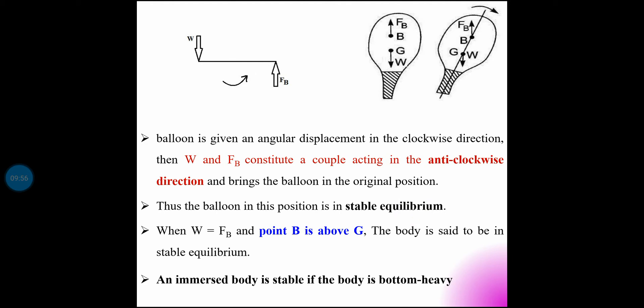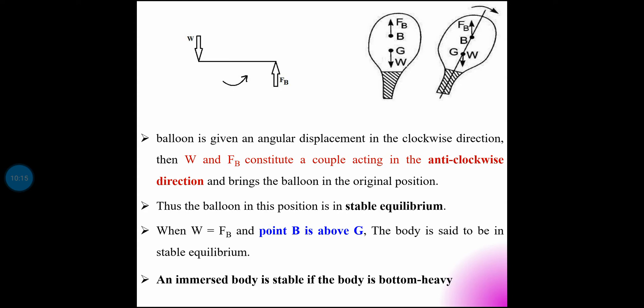The body is in stable equilibrium. For a submarine, placing the heavier parts in the lower half results in stable equilibrium.